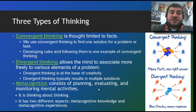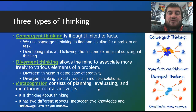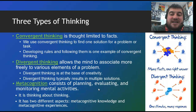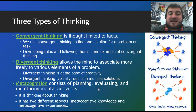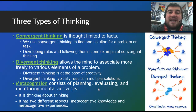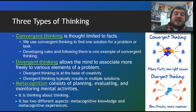The three types of thinking. Convergent is the non-creative type — it's limited to facts. We take all the facts we have at the time and use them to find one solution to a problem or task. Developing rules and using them is an example of convergent thinking. Divergent thinking, however, allows the mind to associate more freely and come up with multiple solutions to a problem. This is how creative thinkers think, and you will get multiple solutions with divergent thinking. And then metacognition is thinking about thinking — it's planning, evaluating, and self-monitoring your mental activities.